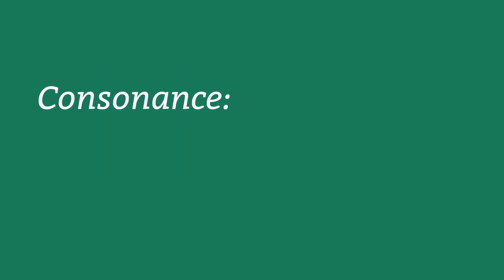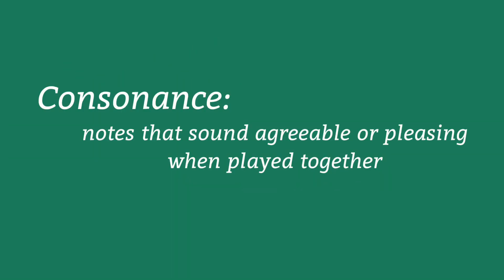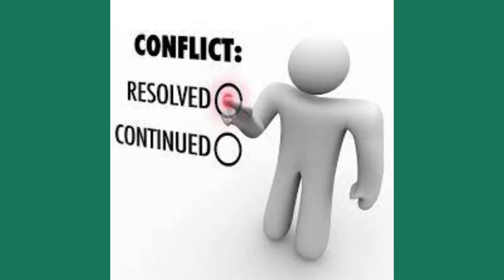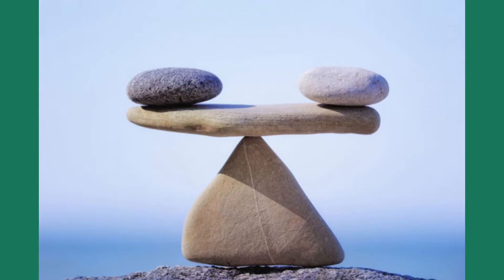The word consonance typically refers to notes that sound agreeable or pleasing when played together. They can also be described as stable. Musicians typically use this term to describe intervals that don't sound like they need to be resolved — they sound complete on their own. We can listen to what these intervals sound like, but let's also take a look at how they interact.